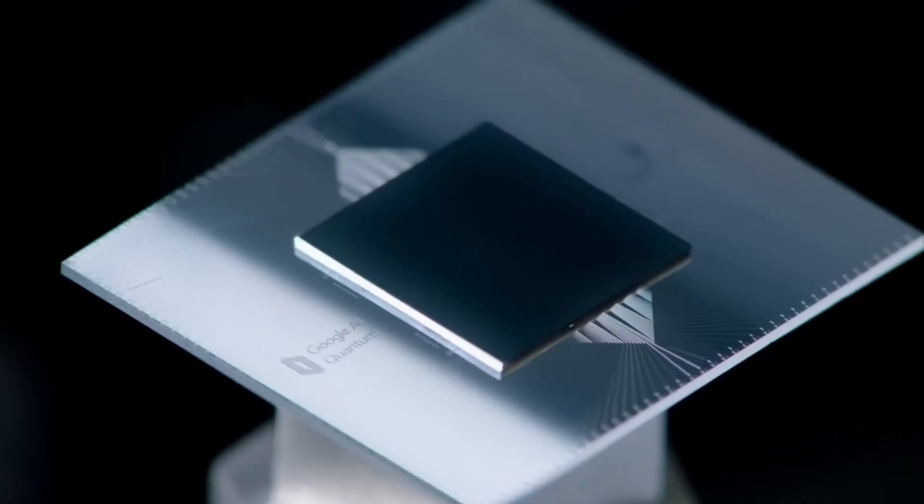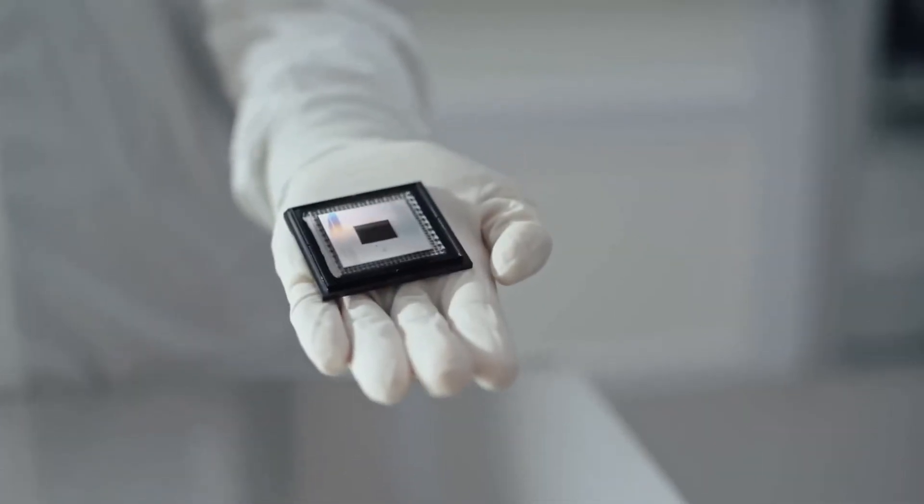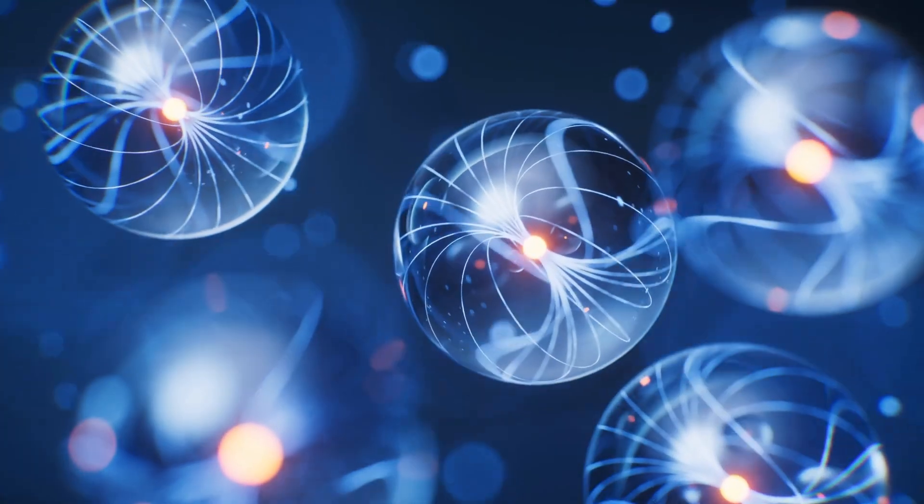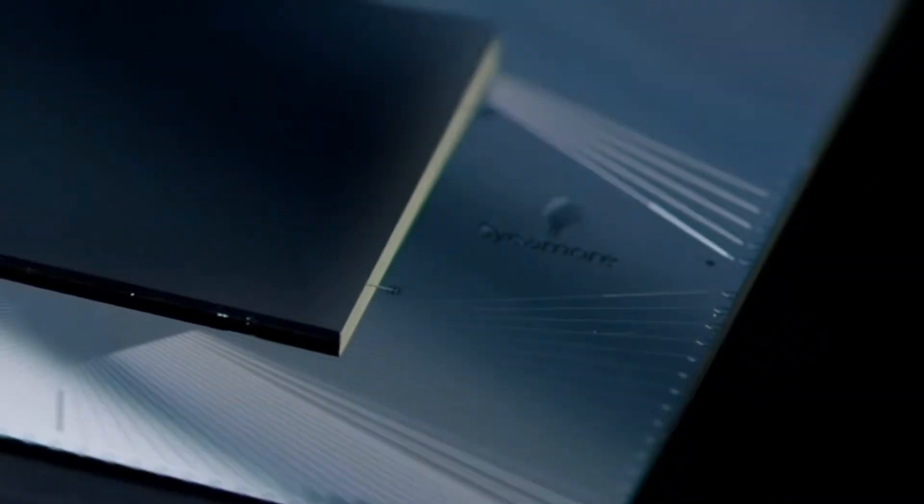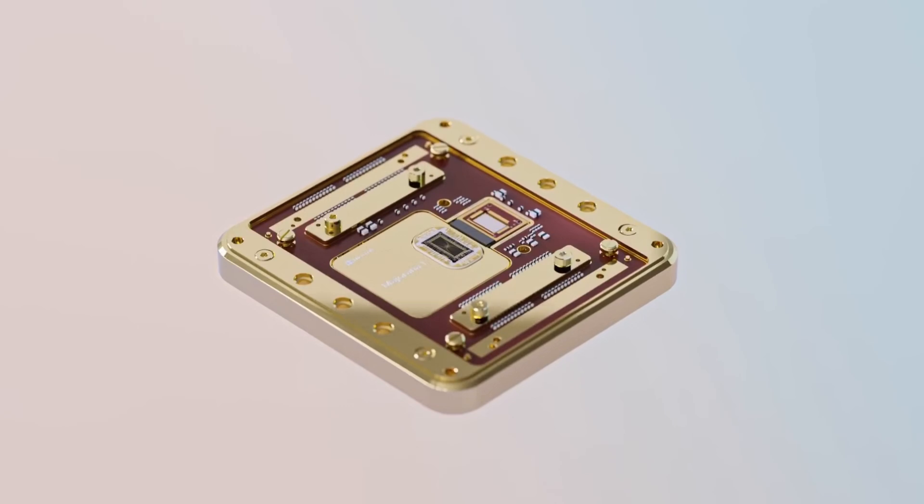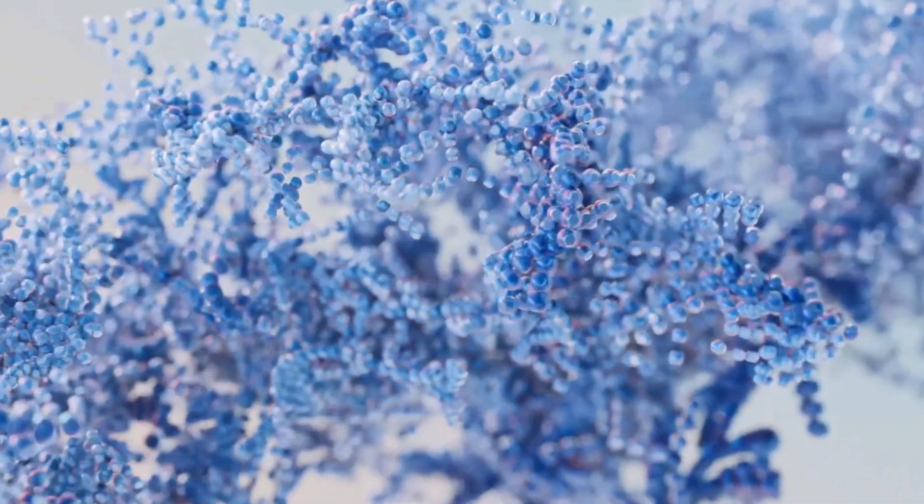Just a few months ago, Google dropped their Willow quantum chip. Get this, it can perform calculations in under five minutes that would take our fastest regular supercomputers 10 septillion years. That's longer than the universe has existed. Not to be outdone, Microsoft unveiled their Majorana One chip, designed to eventually pack a million qubits onto a single chip.